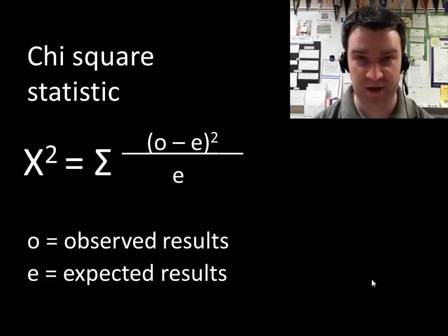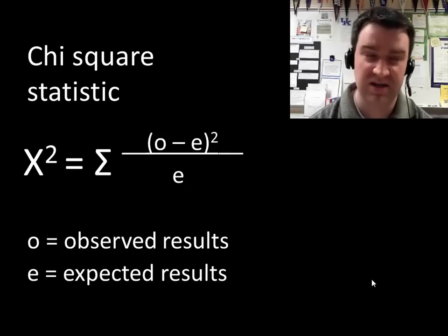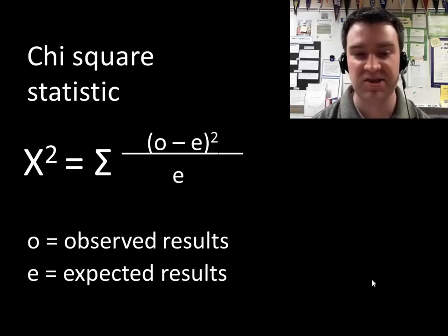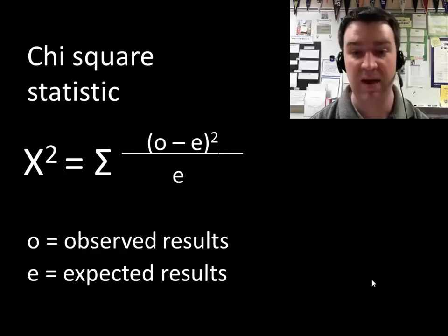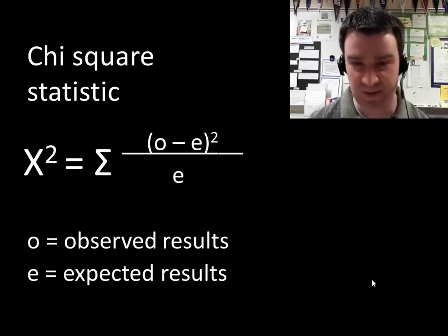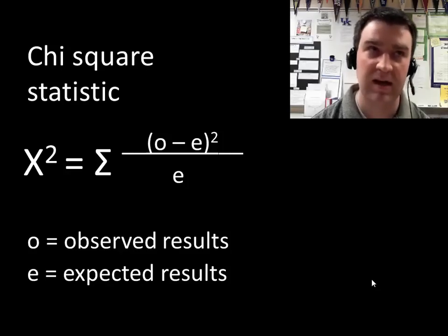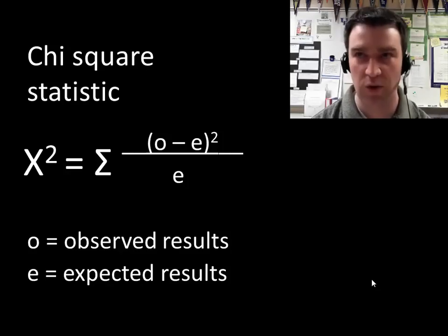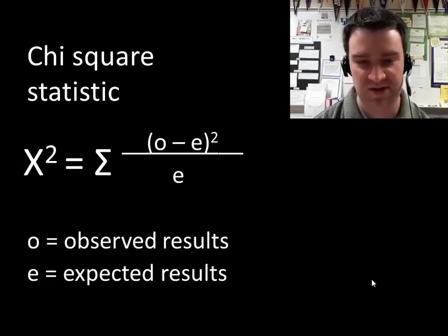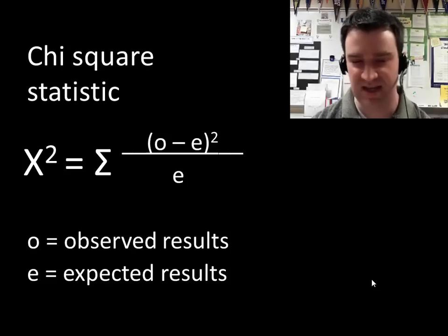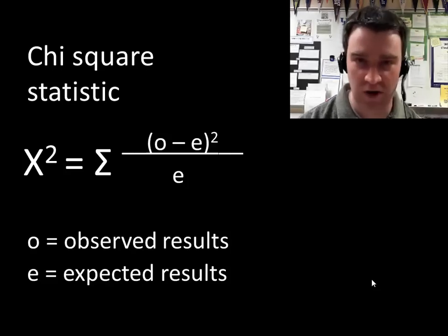Our chi-square statistic uses the following formula, which is given on your equation sheet. Basically, what this formula is calculating is the overall amount of difference between what you observed and what you expected to get. O minus E gives us the difference between those numbers. We square it because we don't care if actual results are less or greater than expected — we just want the magnitude of difference. We make it a fraction of what we expect, and the sigma sign tells us to add up all the differences for all data points.